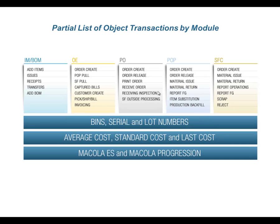This is a diagram of a partial list of our object transactions by module. We have object methods that are part of inventory and bill of material — things like inventory transactions and bill of material management. Under orders, we do order create, and the order create objects are quite robust. They support all the different parameter options that drive the order process as part of order management setup, such as creating POP pull or shop floor pull items.